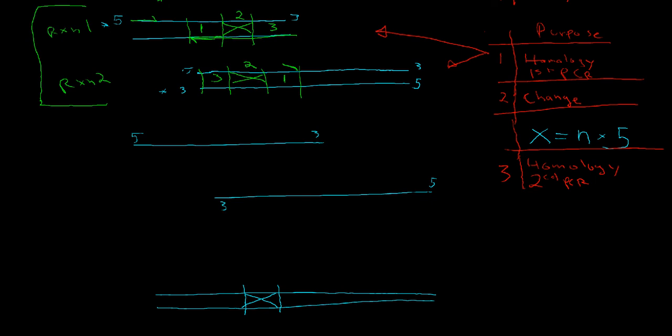And then we can start to map on where our original oligos were. So, for our reaction 1, we have these sections 1, 2, and 3. And for our reaction 2, again, we have the same sections 1, 2, and 3 with mutations.